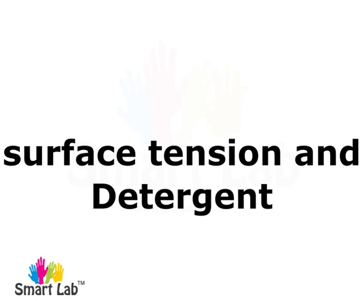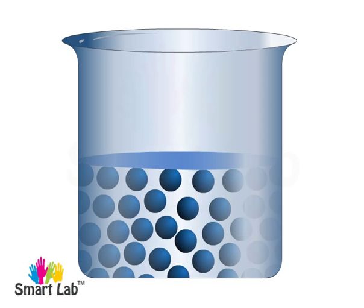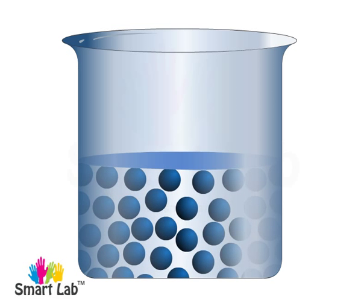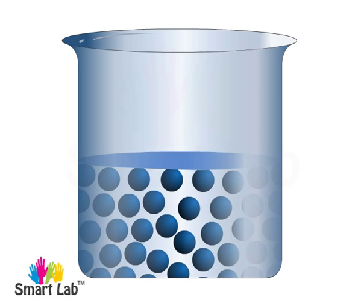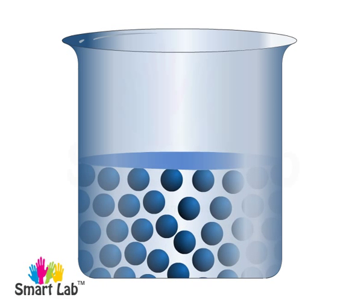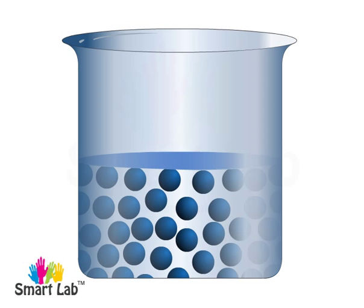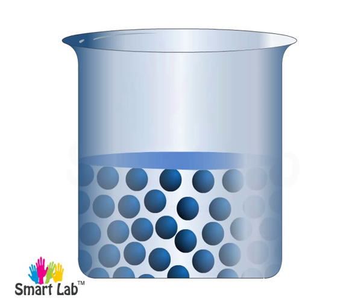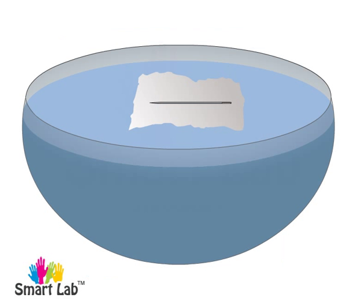Surface tension and detergent: As liquids have no definite shape but have a definite volume, the liquid acquires a free surface when poured in a container. The liquid molecules stay together because of the attraction between the molecules. These surfaces possess some additional energy. This phenomenon is known as surface tension.